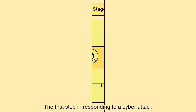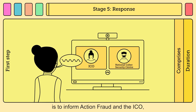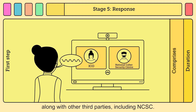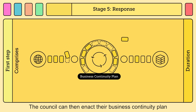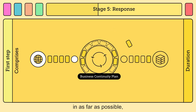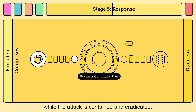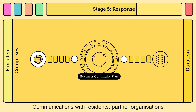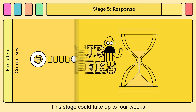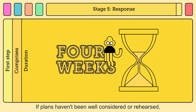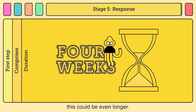Response. The first step in responding to a cyber attack is to inform Action Fraud and the ICO, along with other third parties, including NCSC. The Council can then enact their Business Continuity Plan and implement temporary processes to restore services, in as far as possible, while the attack is contained and eradicated. A forensic investigation will also take place. Communications with residents, partner organizations, and staff will be managed. This stage could take up to four weeks as the Council works towards workable stability. If plans haven't been well considered or rehearsed, this could be even longer.